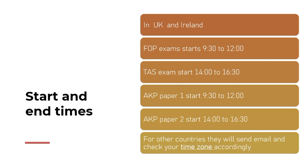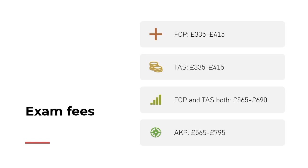Regarding the cost of MRCPCH theory exams: if you give FOP and TAS separately, it costs £335 to £415 sterling. If you give both together you can save some money — it is £565 to £690 sterling. For Applied Knowledge of Practice, the cost is £565 to £795 sterling. In Pakistan, this is approximately 195,000 Pakistani rupees for Applied Knowledge, and approximately 90,000 Pakistani rupees for FOP and TAS separately.